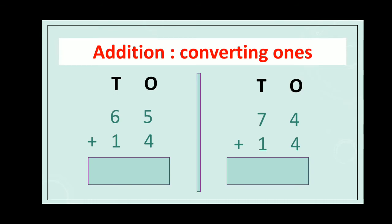Addition converting ones: 65 plus 14. We add ones first. 5 plus 4 is equal to 9, so we write 9 in the ones column. Then 6 plus 1 is equal to 7, so we write 7 in the tens column. The answer is 79. Now another example: 74 plus 14. We add ones first. 4 plus 4 is equal to 8, so we write 8 in the ones column. 7 plus 1 is equal to 8, so we write 8 in the tens column. The answer is 88.